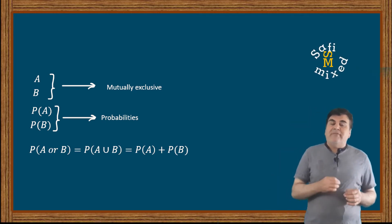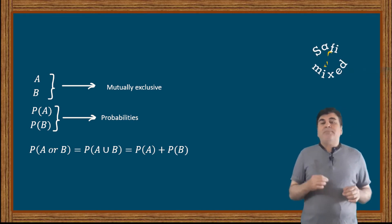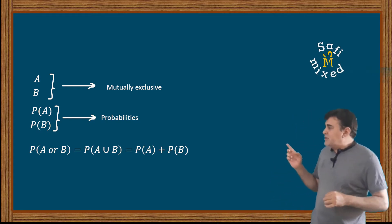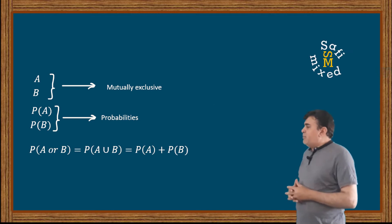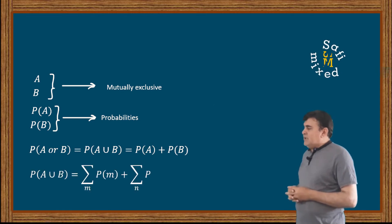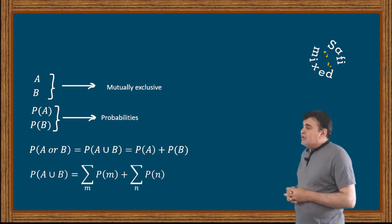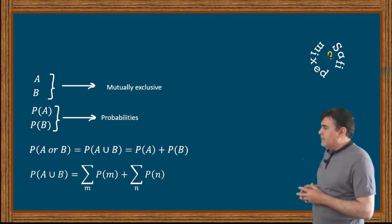Now if there are m equally probable outcomes in event A and n equally probable outcomes in event B, then this equation takes the form: P(A ∪ B) = Σ_m P(m) + Σ_n P(n).